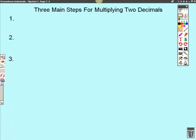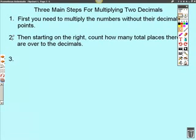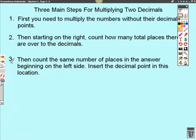There are three main steps for multiplying two decimal numbers. First, you need to multiply the numbers without their decimal points. Second, then starting on the right, count how many total places there are over to the decimals themselves. And finally, step three, you would then count the same number of spaces in the answer beginning on the left side. Then you would insert the decimal point in this location.